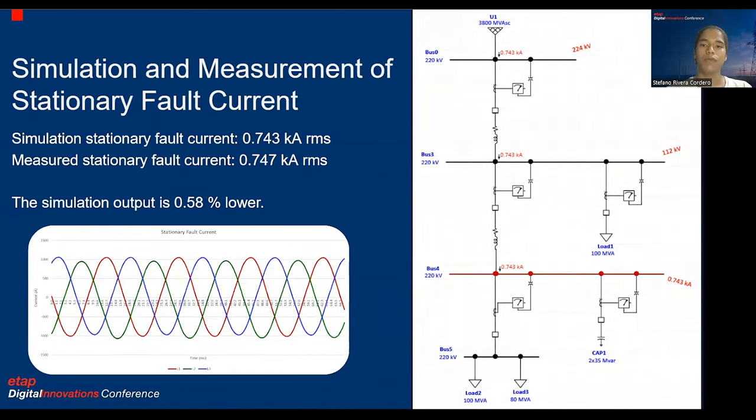Finally, the value obtained from the simulation for the stationary fault current was 0.743 kiloamps, and the measured value was 0.747 kiloamps. In this case, the deviation from the simulation is even lower, being only 0.58%.